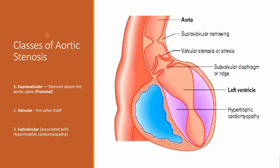There are three types of aortic stenosis: supravalvular — above the valve; valvular — the valve itself; and subvalvular — below the valve. Below the valve could be cardiomyopathy or septal hypertrophy. Supravalvular could be prenatal congenital conditions causing an extra flap above the aortic valve. So understand there are three potential stenosis possibilities: above the valve, on the valve, and below the valve.